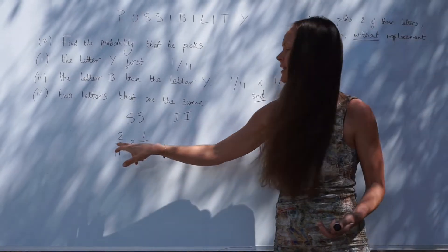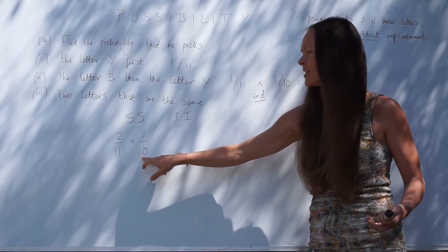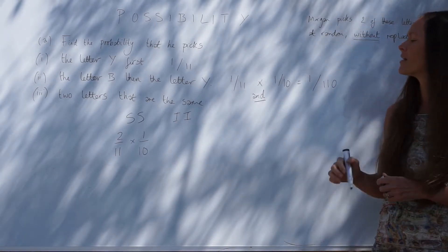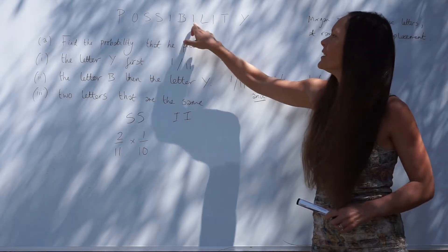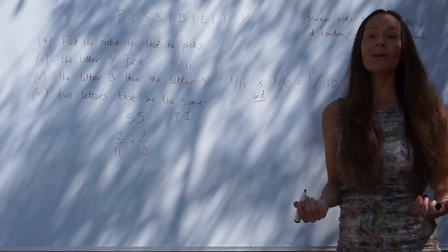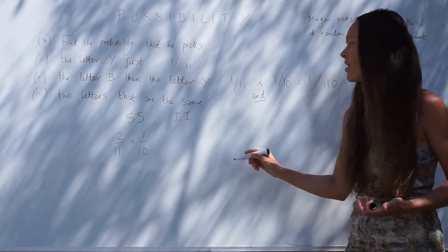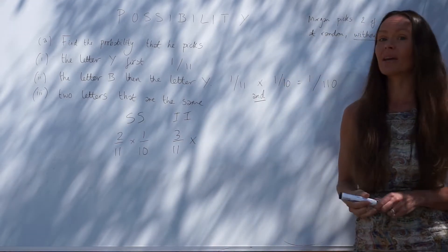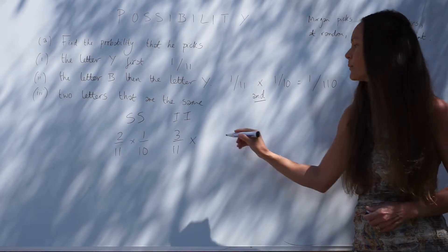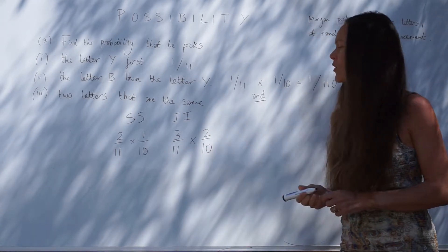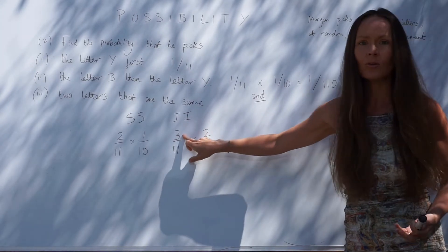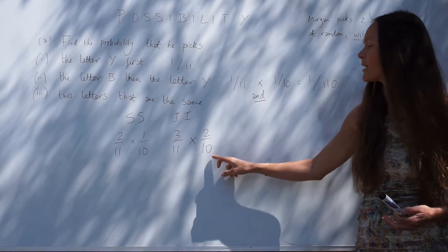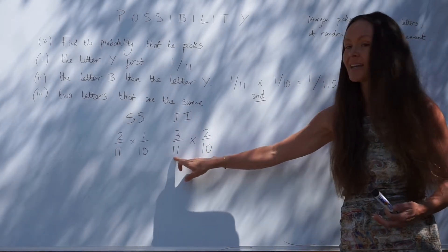Now let's look at the probability of picking an I followed by an I. There are three letter I's, so the probability of first picking a letter I would be three out of eleven. Then if we pick a second letter I it would be two out of ten, because we took one out so there are only two I's remaining, and there are now ten cards altogether.